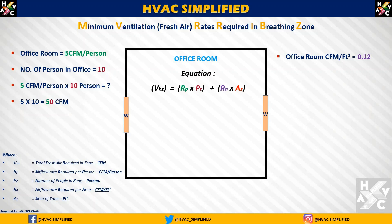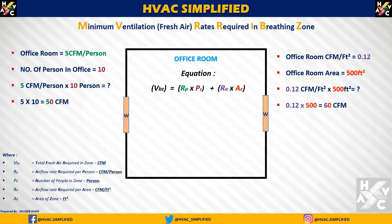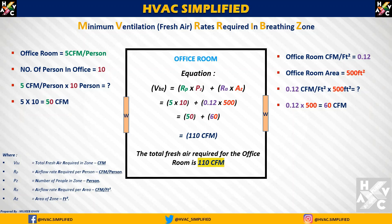उसी अनुसार CFM per square feet देखेंगे — एक office room का area अगर इस example में 500 square feet लेते हैं, तो 0.12 CFM per square feet multiply by 500 square feet करने पर value आती है 60 CFM। यहाँ पर हमें 2 values मिले हैं: 1 CFM per person के अनुसार (50 CFM) और 1 CFM per square feet के अनुसार (60 CFM)। जब हम इन दोनों values को इस equation में डालते हैं तो 50 CFM plus 60 CFM = 110 CFM। Therefore, the total fresh air required for an office room is 110 CFM as per ASHRAE 62.1।